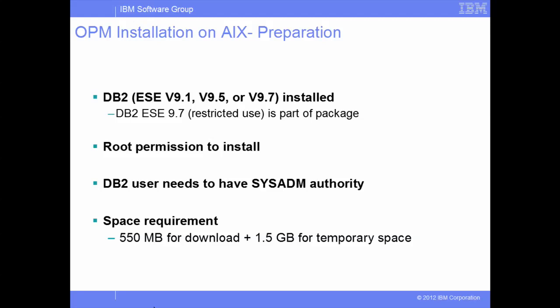To install the product using an alternate temporary directory, we could define the variable iaTempdir to point to a different directory and export it before starting the installation. This directory must exist, be writable by the current process, and have file permissions same as the temp directory in Unix or temp directory in Windows. The installation requires approximately 3.5 GB for the product.